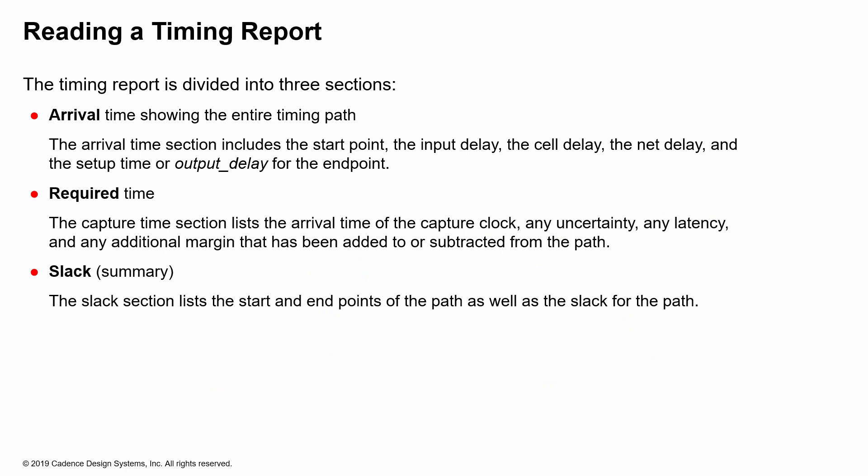Typically, any timing report is broken down into the arrival time calculation, the required time calculation, and slack. The arrival time includes the start point, any input delays, cell delays, and so on up to the end point. The required time calculation typically shows your capture clock and any uncertainties that are subtracted from the required time. Finally, the slack calculation shows whether the timing is violated or met, and also any additional information pertinent for your design or path.